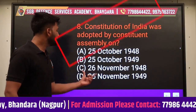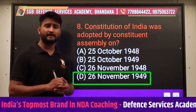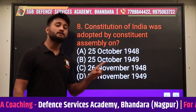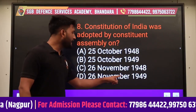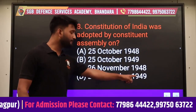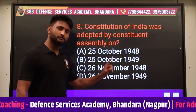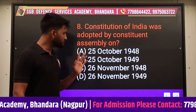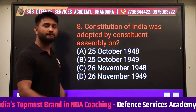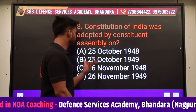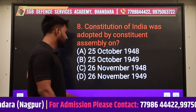Next question: Constitution of India was adopted by Constituent Assembly on कब? 26 November 1949 - Indian Constitution के बारे में दो important तारीखें हैं: 26 November 1949 जब इसे adopt किया गया, और 26 January 1950 जब इसे अमल में लाया गया। यह तारीख preamble में भी आती है। Adopt की बात पूछी गई है तो answer रहेगा D - 26 November 1949।